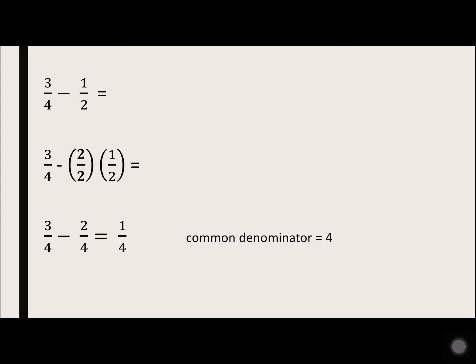So multiply 1 over 2 times 2 over 2, and you get 2 over 4. 3 over 4 minus 2 over 4 equals 1 over 4.